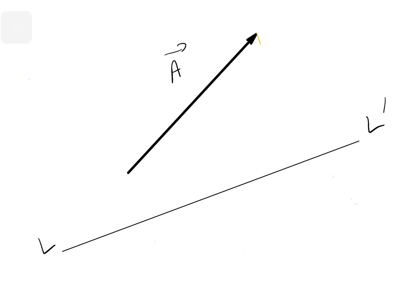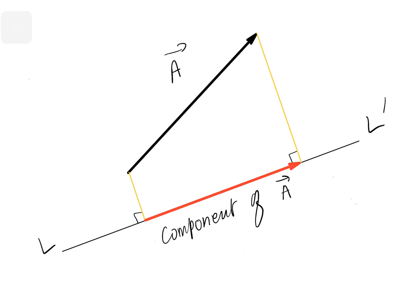To find the component, from the head of the vector we drop a line perpendicular to the line L, L dash. From the tail of the vector we also drop a line. These angles are 90 degrees. Then this vector here is the component of vector A along the line L, L dash.